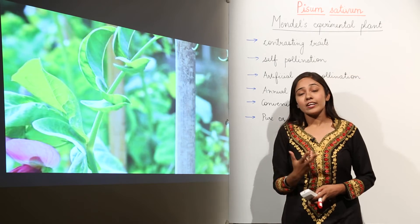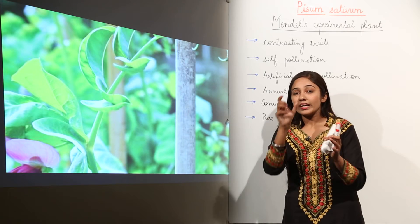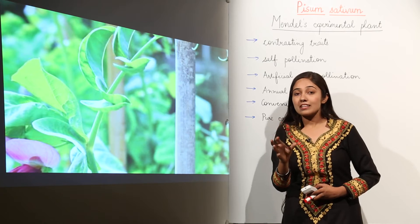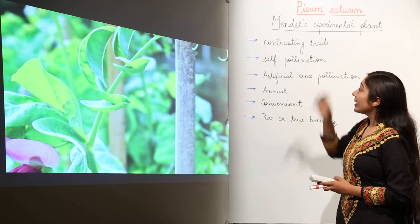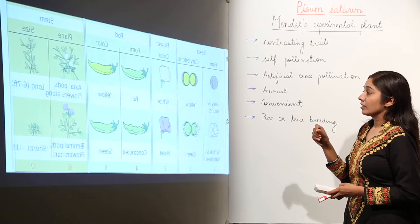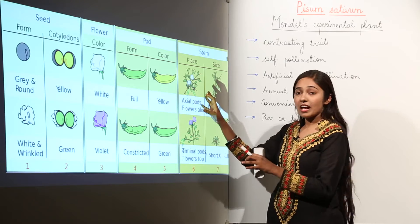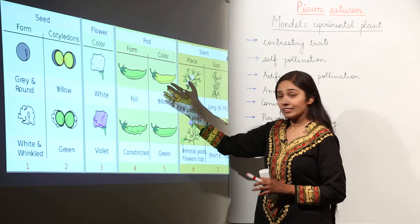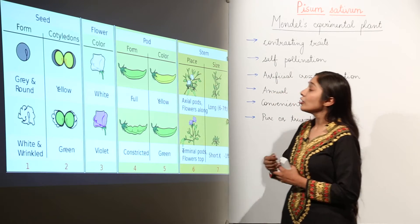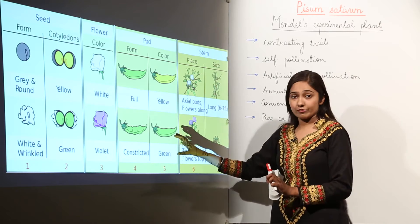What do we mean by contrasting traits? When we talk about two opposing traits in which one is dominant and the other is recessive, that pair is known as a contrasting trait. For example, in the pea plant, some flowers are white in color and some flowers are violet in color — this is a pair of contrasting traits: white flowers and violet flowers.